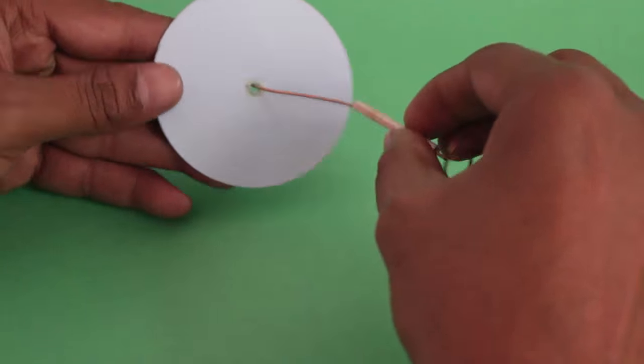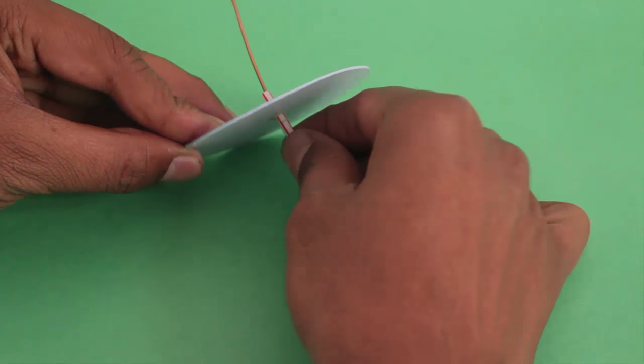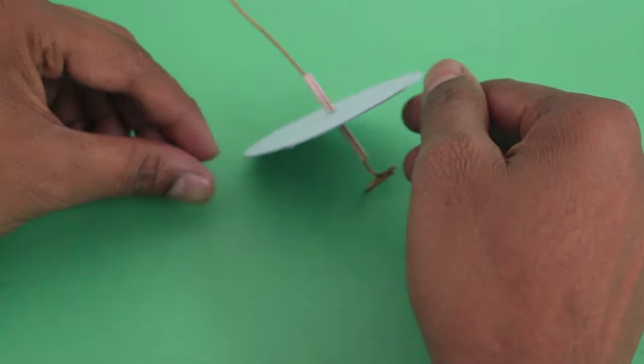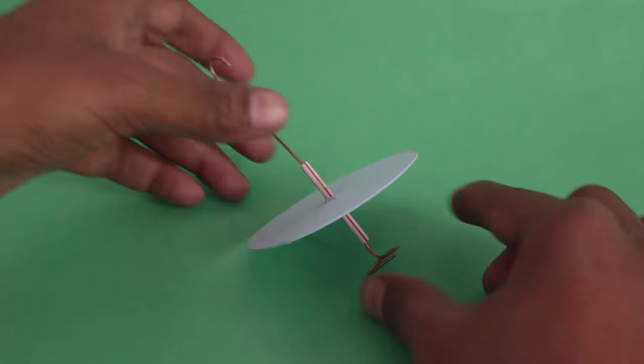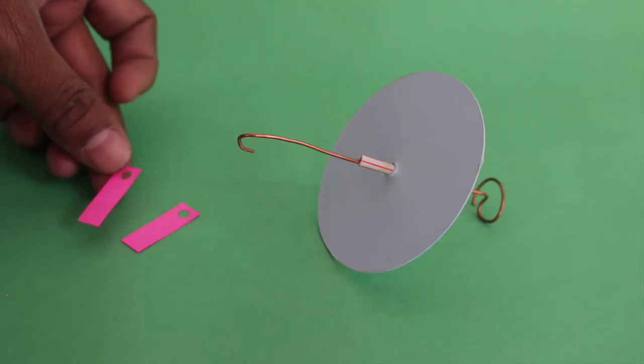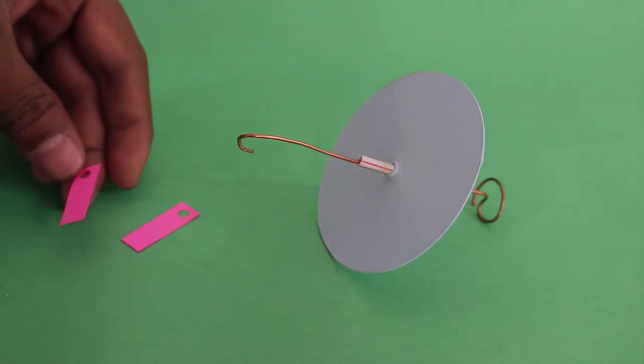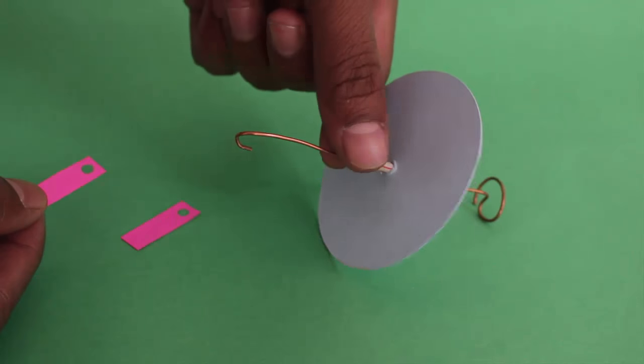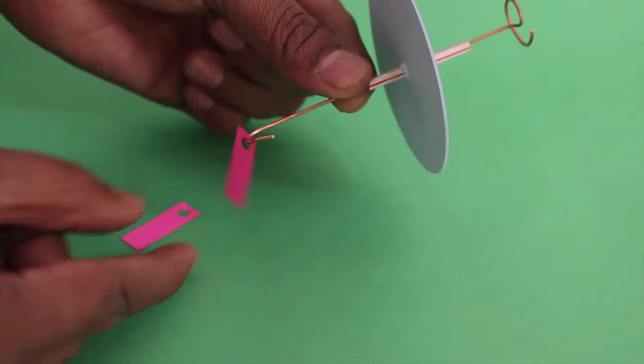Press fit the card circle in the plastic straw. Then cut two strips of paper three centimeters long and one centimeter wide. Punch a hole on one end of each strip. Hang the two strips by the hook.